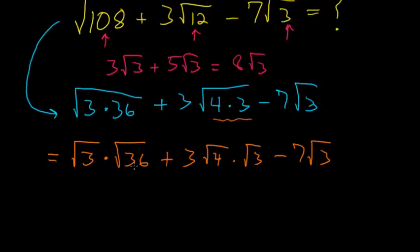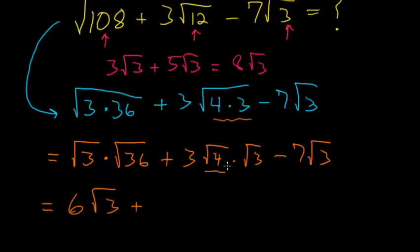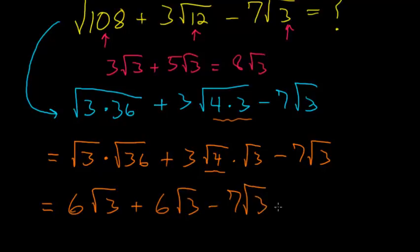The square root of 36 is just 6, so we have 6 times the square root of 3. The square root of 4 is just 2, so we have 3 times 2, or 6 times the square root of 3, minus 7 times the square root of 3.